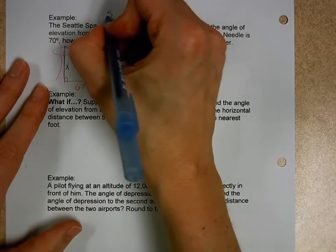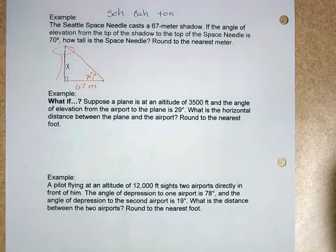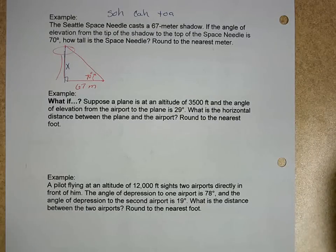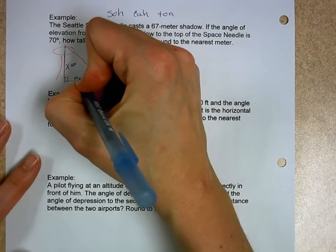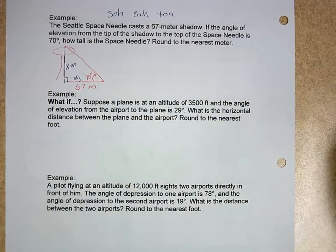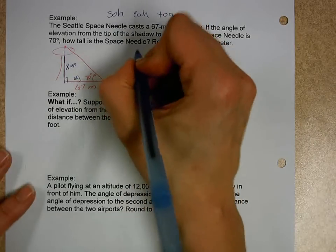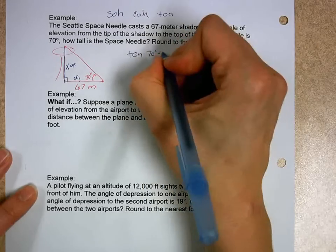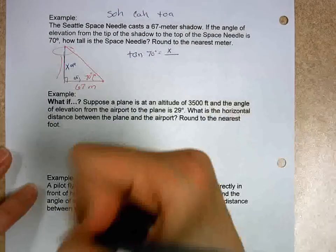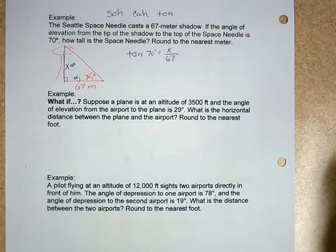Now, of our sayings, what two sides do we have? We have our opposite and our adjacent. Which ratio am I going to use? Tangent. Very good. The tangent of 70 degrees is opposite, which is x giving us our height, to 67 meters, which is our adjacent leg.